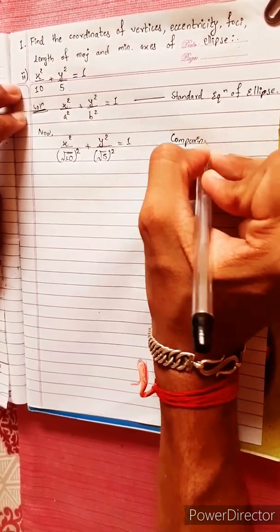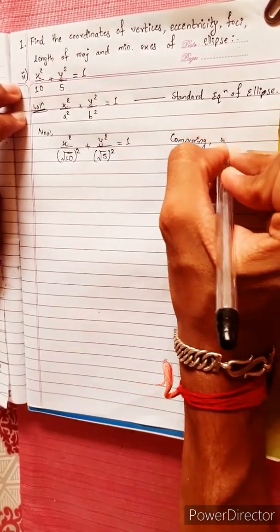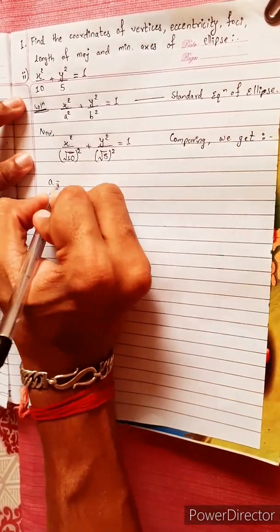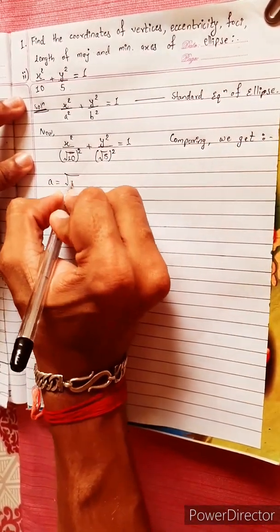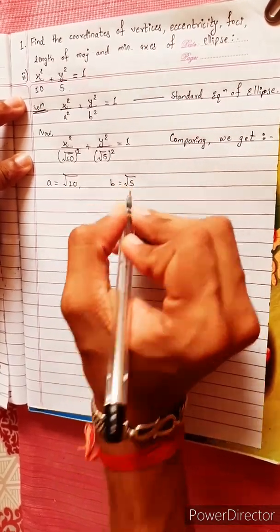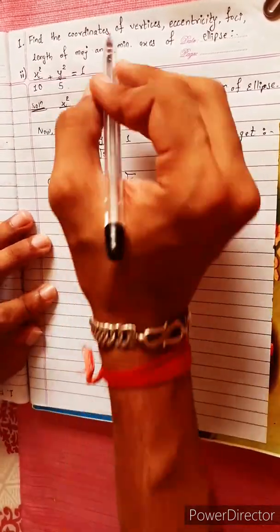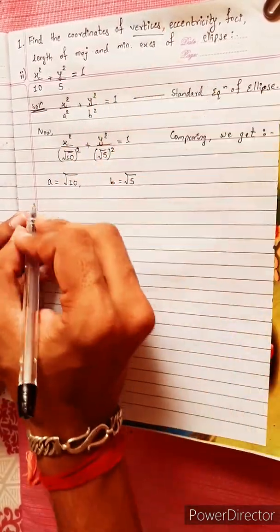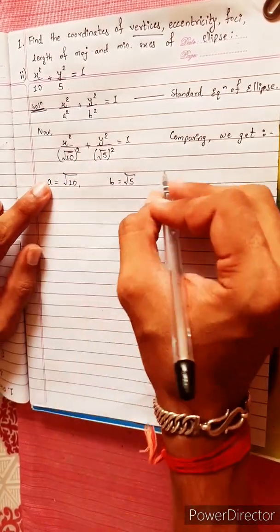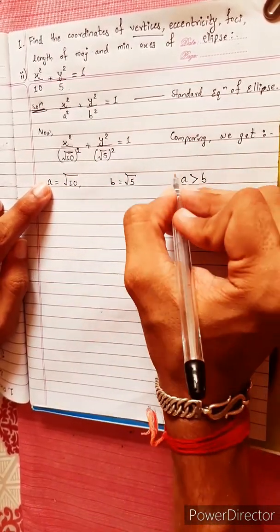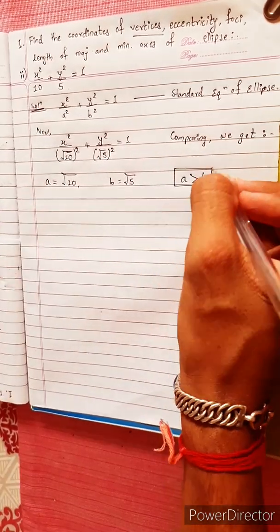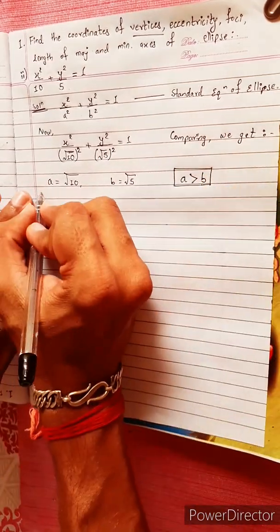Comparing, we get: a squared equals 10, so a is under root of 10. b squared equals 5, so b is under root of 5. Therefore a value is under root of 5.